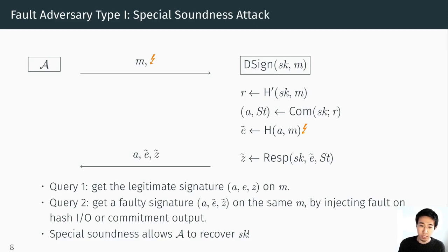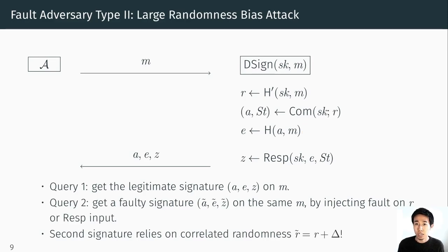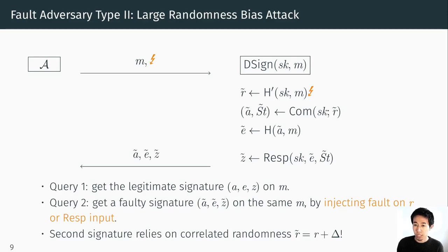The other type of attack is the large randomness bias attack. Again the adversary queries with a message and gets a legitimate signature. For the second query, the adversary injects a fault into the output of the first hash function. Since the adversary knows the randomness is the same when signing the same message, the fault slightly perturbs the randomness R. This artificially causes a very large randomness bias — essentially the second randomness is a bit different from the previous one — and using this fact the adversary can efficiently recover the secret key.